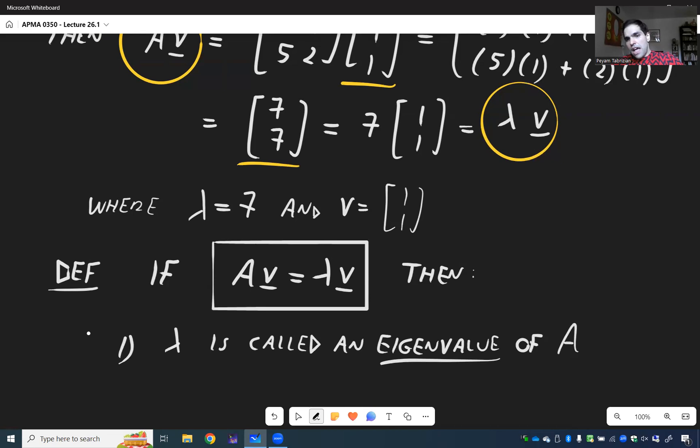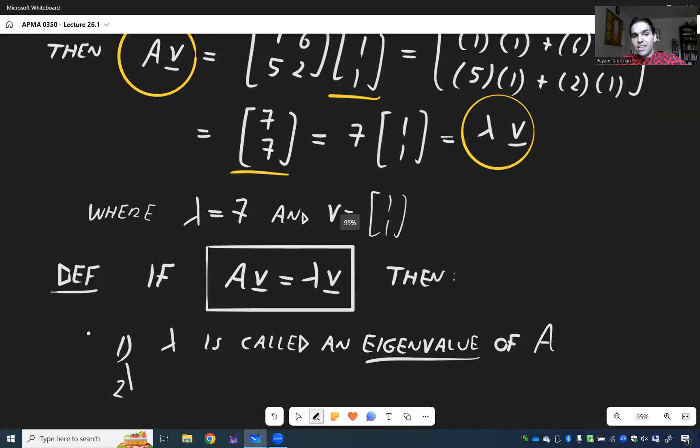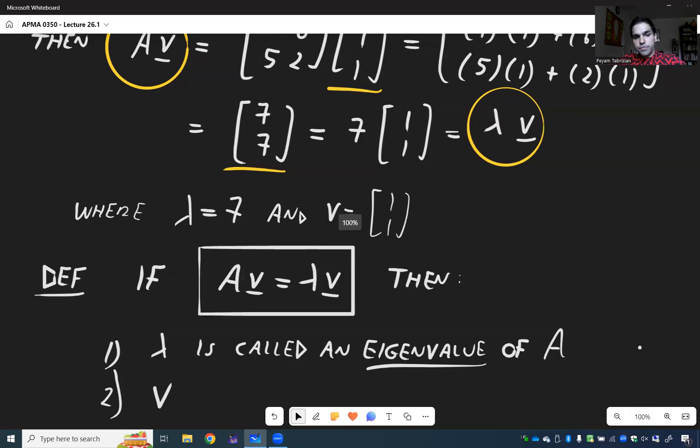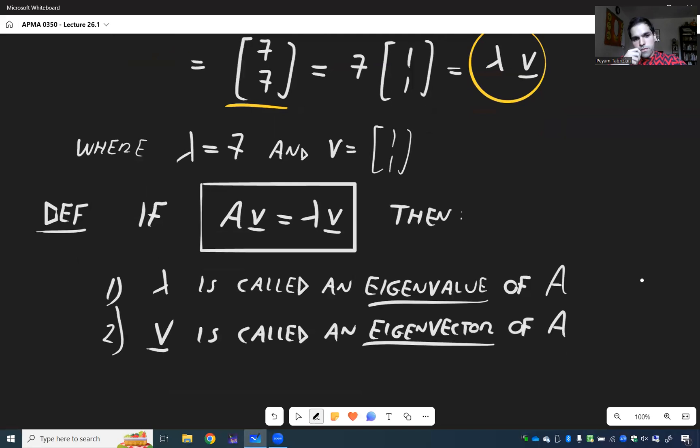And this vector V is called an eigenvector of A, corresponding to lambda. So eigenvectors always go with those numbers, eigenvalues.